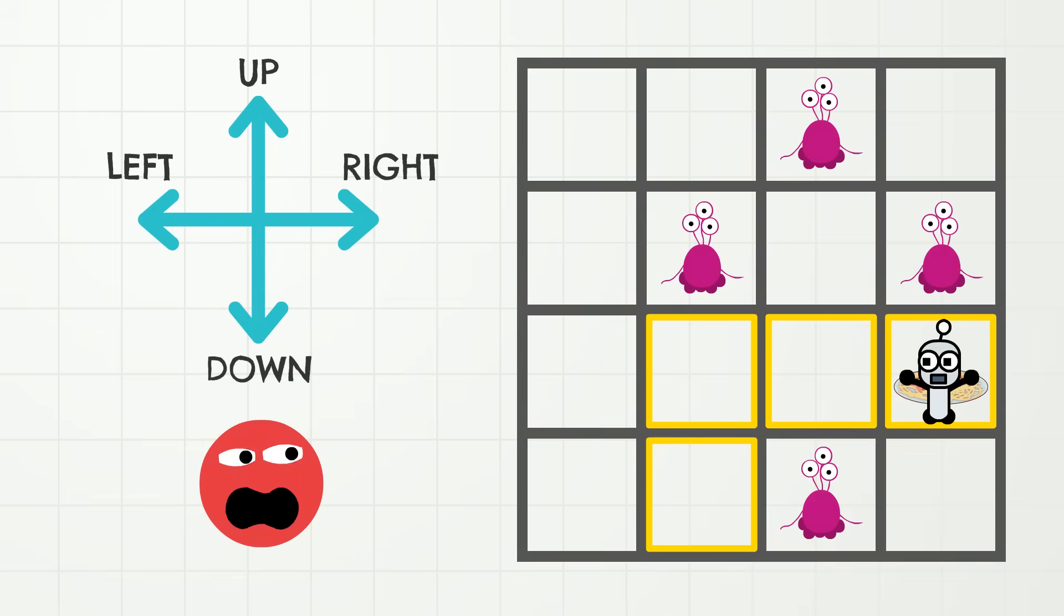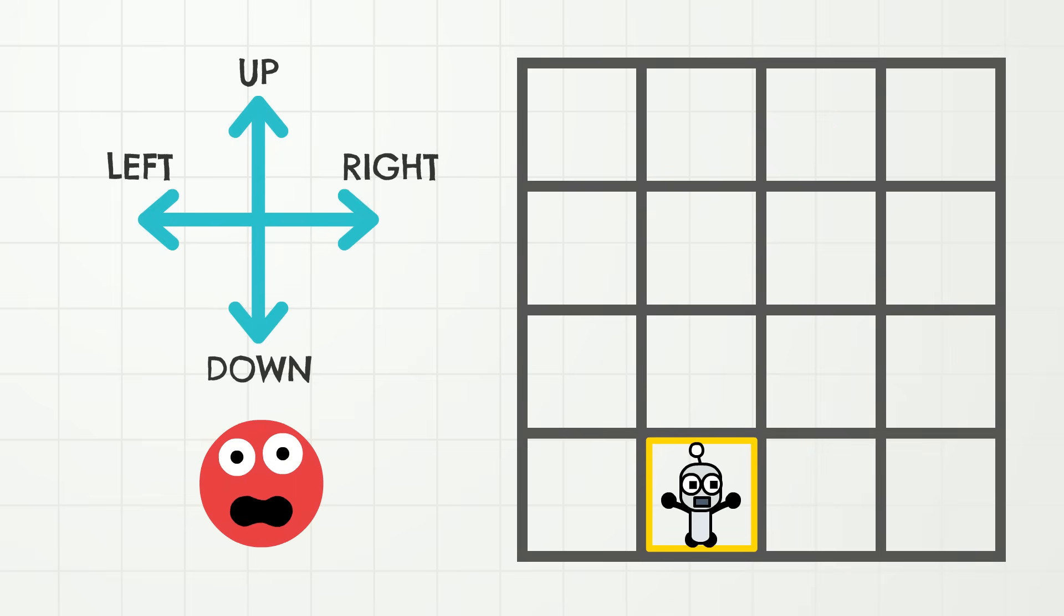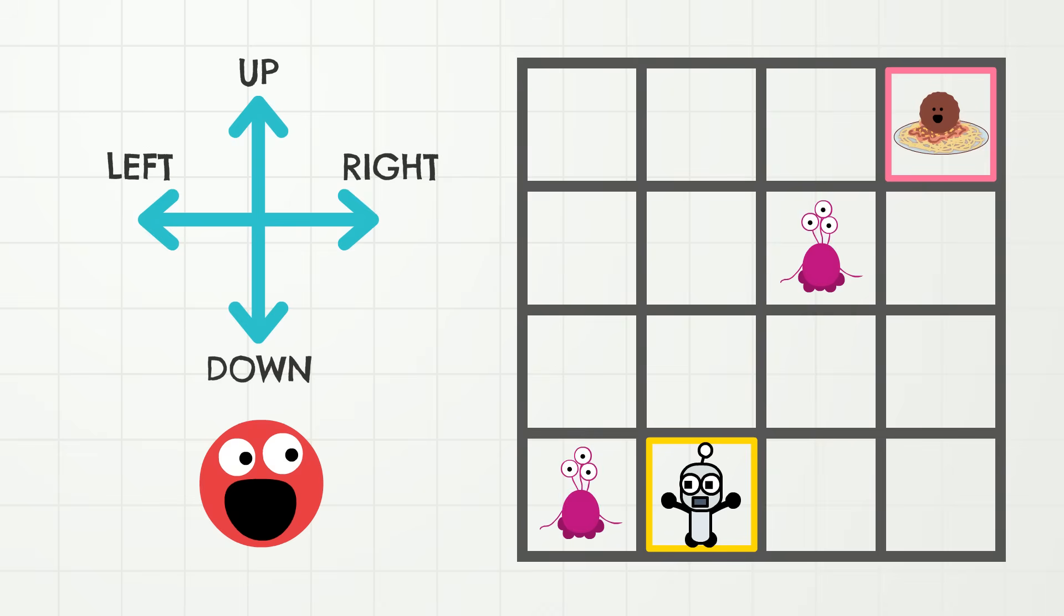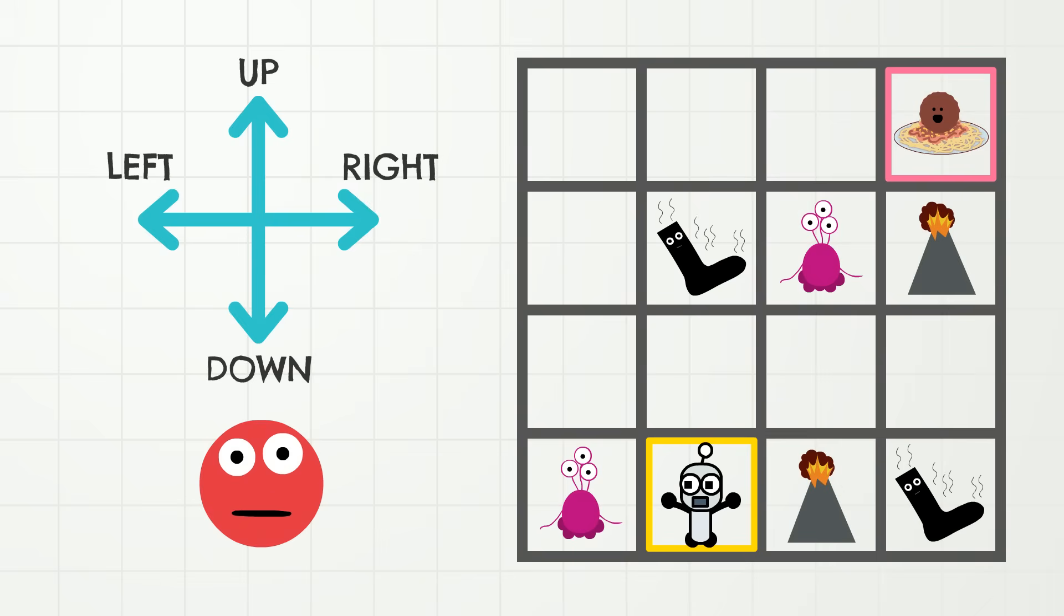Okay, let's play one last time! And Tiny Robot is still hungry for spaghetti! Wow! This time, it is going to be more difficult because Tiny Robot has to watch out for monsters, volcanoes, and stinky socks! Oh, so stinky! Now, I need you to tell Tiny Robot where to go! Remember to say the direction and also how many squares! Okay, go!